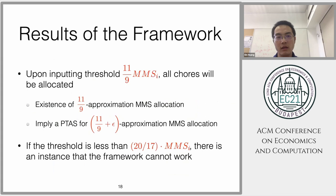Here is the result of this framework. If we input the threshold of each agent with 11/9 maximum share, then all the chores will be allocated, meaning we will get a proper allocation. The computation of maximum share is NP-hard. But if we combine this with a PTAS from job scheduling literature, then we can get an 11/9 plus epsilon approximation. We also have a lower bound for this framework—we cannot prove a better approximation ratio than 20/17.